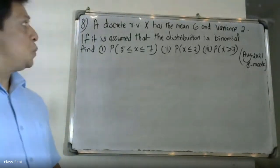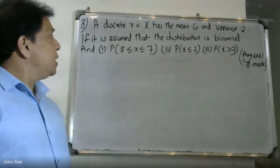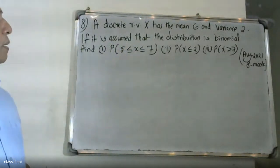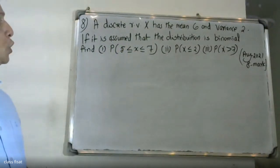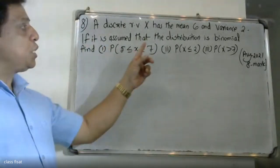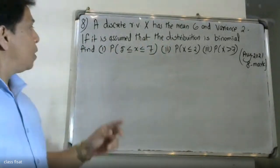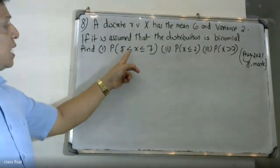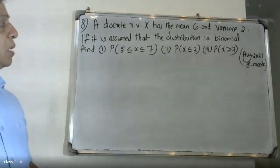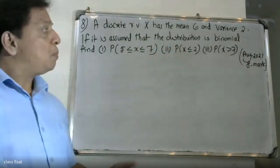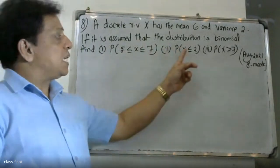Good morning students. A discrete random variable x has mean 6 and variance 2. If it is assumed that the distribution is binomial, find: probability of 5 less than or equal to x less than or equal to 7, probability of x less than or equal to 2, and probability of x greater than 7.